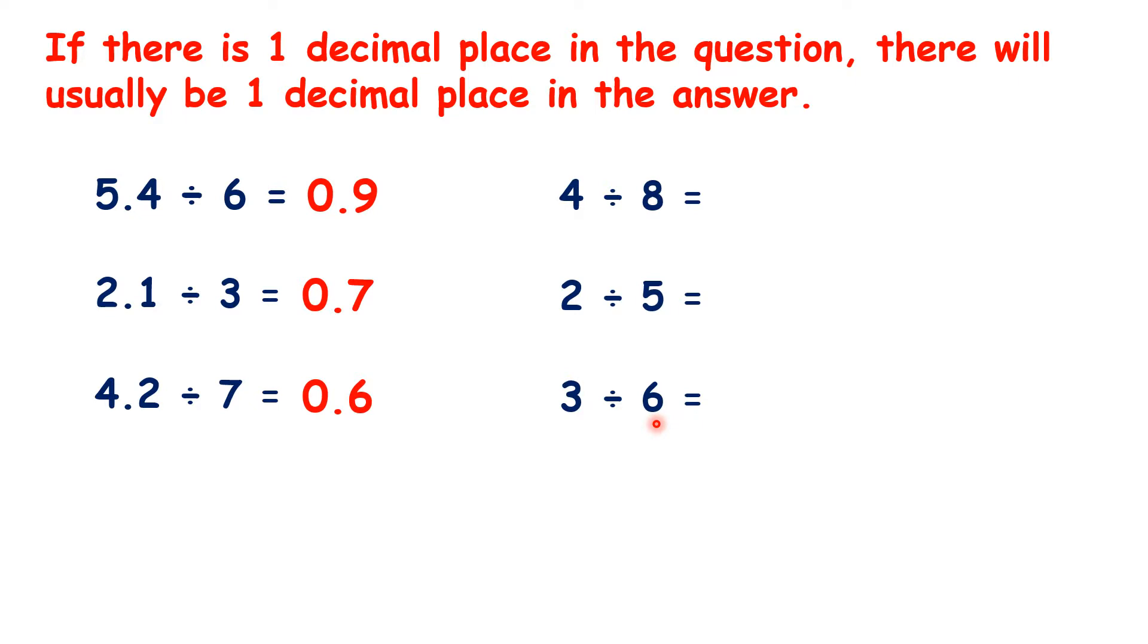So rather than 4, 2, and 3, we can write out the same questions but with 4.0, 2.0, and 3.0. We haven't changed the question, because writing .0 at the end of a whole number doesn't change it.